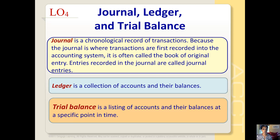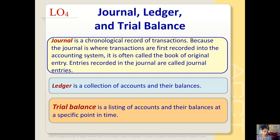Let's go through a little more terminology. The journal is a chronological record of transactions. Because the journal is where transactions are first recorded into the accounting system, it's often called the book of original entry. Entries recorded in the journal are called journal entries. The ledger is a collection of accounts and their balances. The trial balance is a listing of accounts and their balances at a specific point in time.